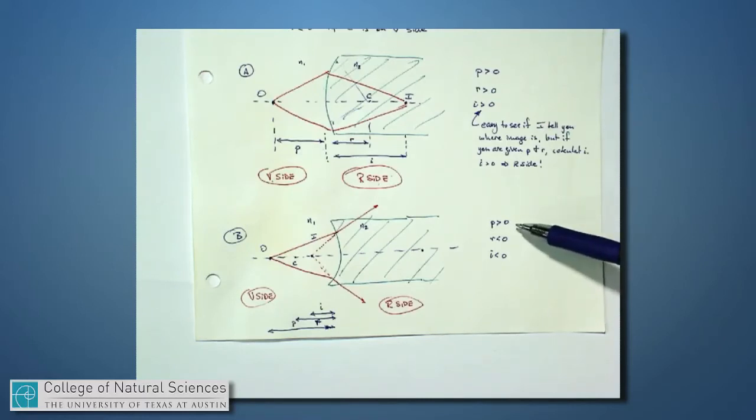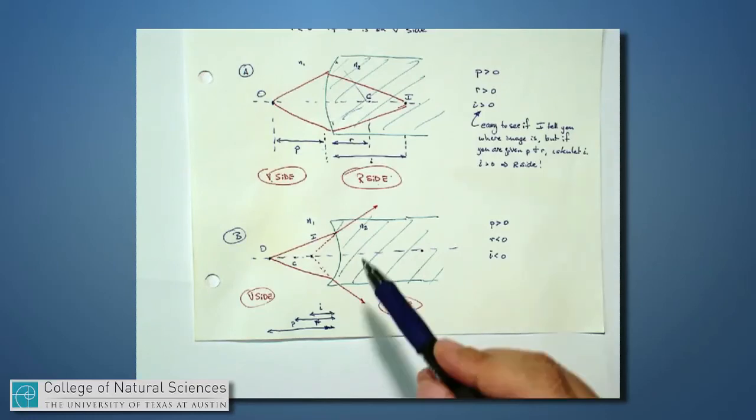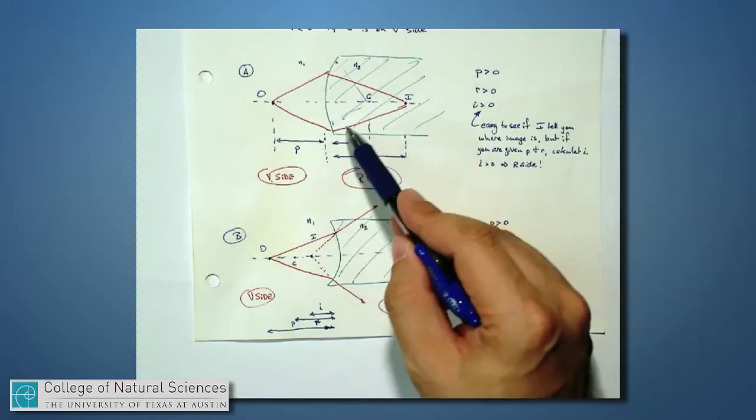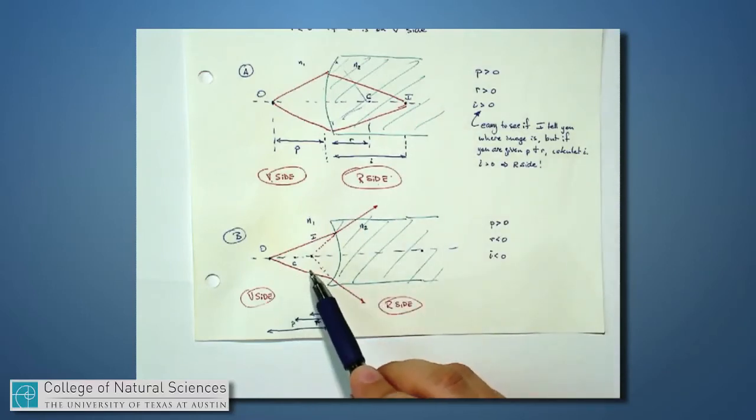Whereas in the second example, p is positive, r is negative, i is negative. Now, I've sort of drawn the image, and you can see where i is positive or negative based on where I drew the image. In this case, the image is a real image, the light rays actually converge. In this case, the image is on the negative side, and the light rays don't actually converge to that point.